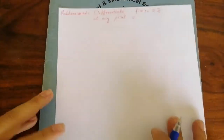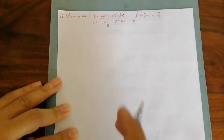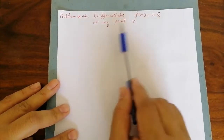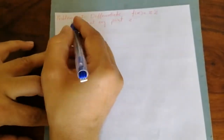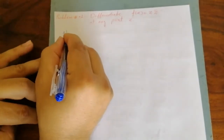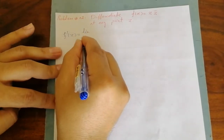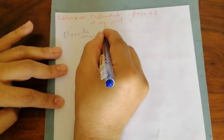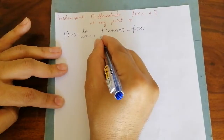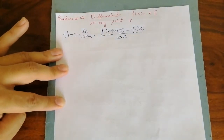Now let us see another problem. We have to differentiate f of z equal to z into z conjugate at any point z. In a similar way I am going to write the definition. The definition is f dash of z is equal to limit delta z approaches to zero, f of z plus delta z minus f of z divided by delta z. Now we have to put the values, just replace z by z plus delta z.